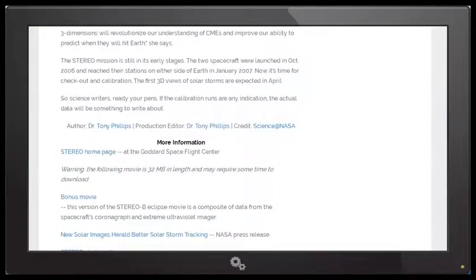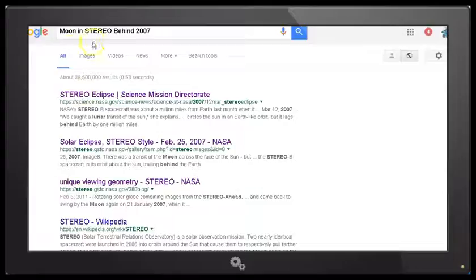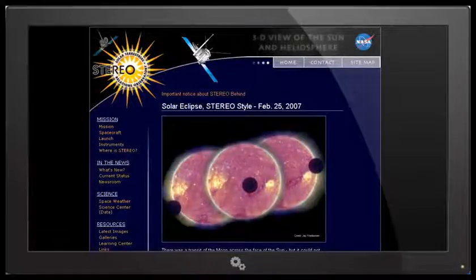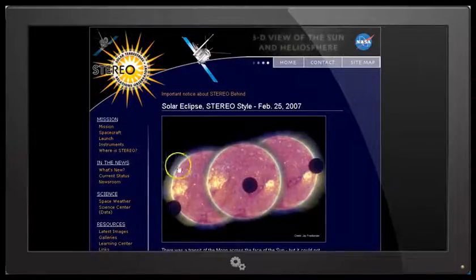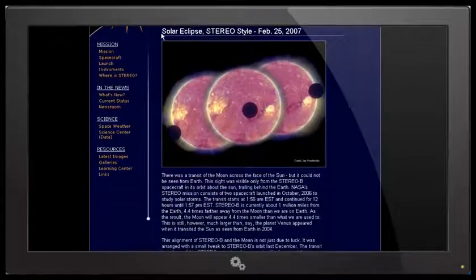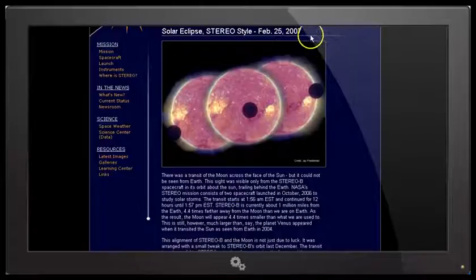But wait, there's more. Let's go back to our main search for 'moon in STEREO Behind 2007'. And let's look at this link. And this is from the STEREO website again at NASA. NASA. You can see the images of this object. This is a composite image, obviously, with three images. What does it say? Solar eclipse, STEREO style, February 25, 2007. And the text reads,